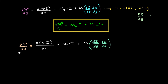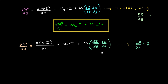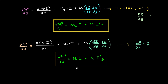We do the same for N*, taking the partial derivative of N* with respect to x. Again, i is a function of z where z equals x times y, so the derivative of i with respect to x is di/dz times dz/dx, and dz/dx is simply y. We find that ∂N*/∂x equals N sub x times i, plus N times i′ times y, keeping in mind that i′ is the derivative of i with respect to z.